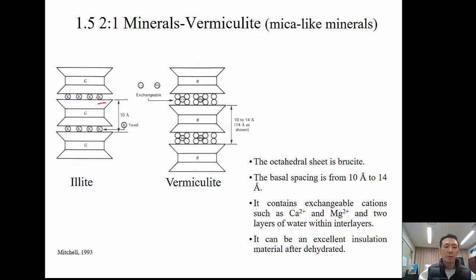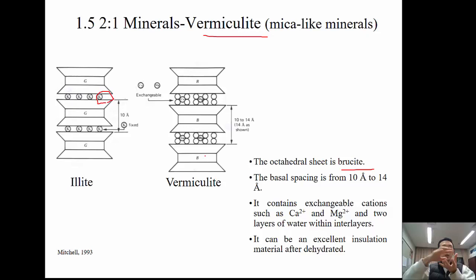Vermiculite is similar to illite but instead of potassium ions, it has exchangeable cations with hydrated water. The octahedral sheet is brucite — composed of magnesium. It contains exchangeable cations such as calcium and magnesium, and two water layers within the interlayers. When dehydrated, vermiculite can be an excellent insulation material, because once dried it has a small volume, but when exposed to moisture it absorbs water, swells, and fills gaps, insulating against mass and heat transfer.